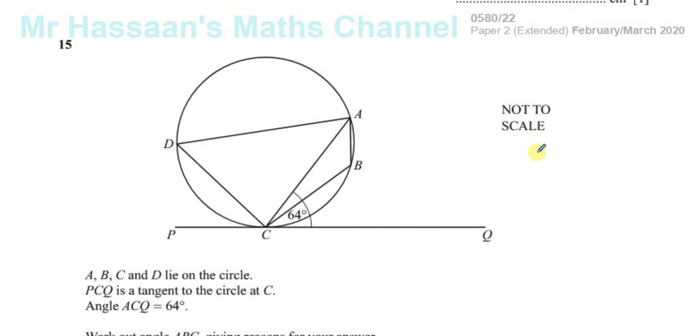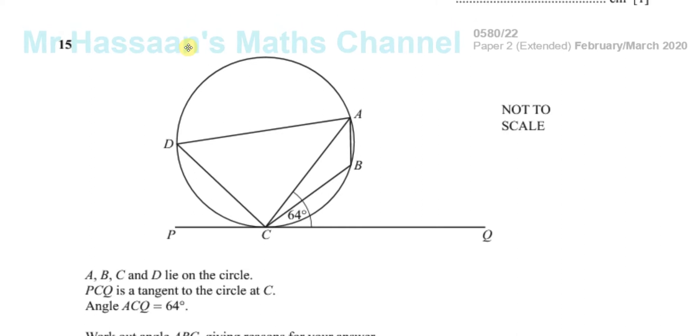Okay, now for question number 15, February-March 2020, the IGCSE paper 2. Here we have a question about angles in circles, question number 15.